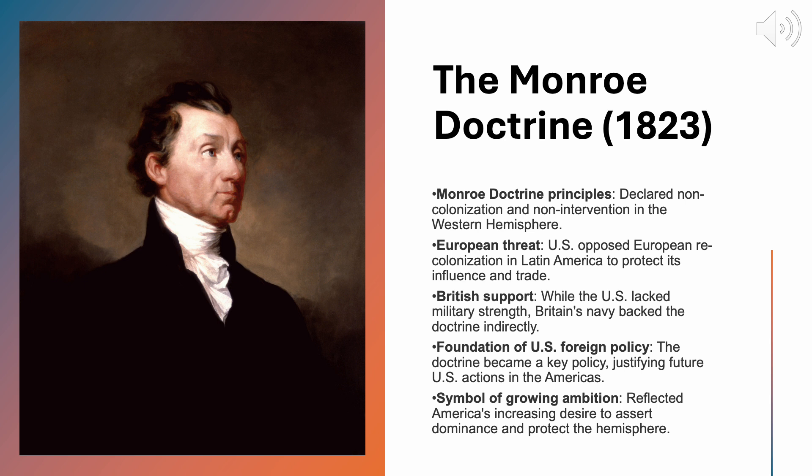The doctrine rested on two key principles. First, non-colonization: the Western Hemisphere was no longer open to European colonization. Second, non-intervention: European powers were to refrain from interfering in the internal affairs of independent nations in the Americas. In return, the United States would abstain from involving itself in European conflicts. While the doctrine was primarily aimed at preventing European intervention in Latin America, it also implicitly asserted that the United States should be the dominant power in the Western Hemisphere, laying the groundwork for future American interventions and territorial expansions.